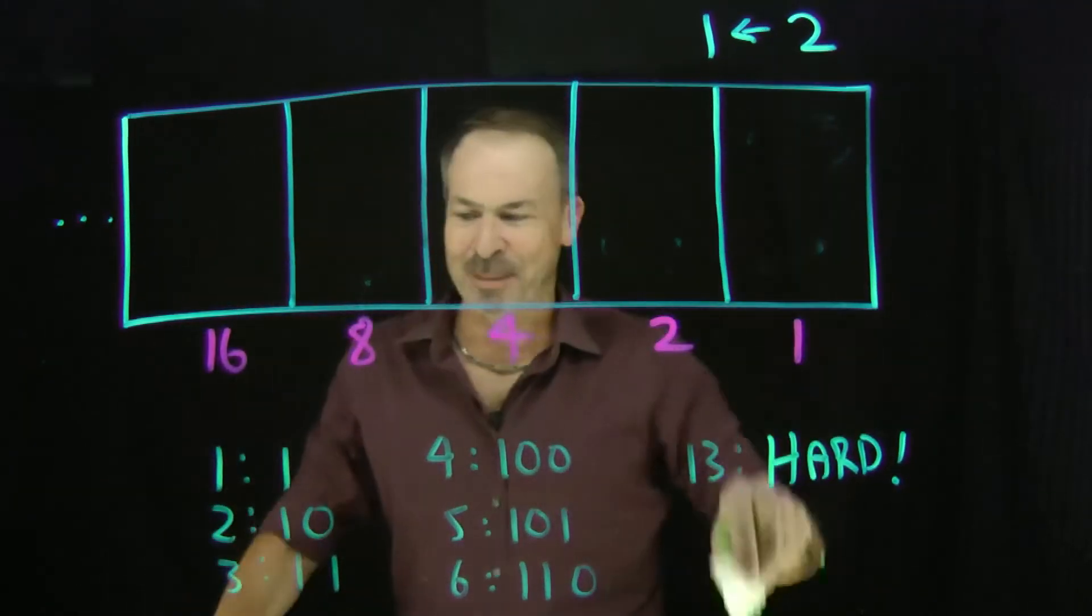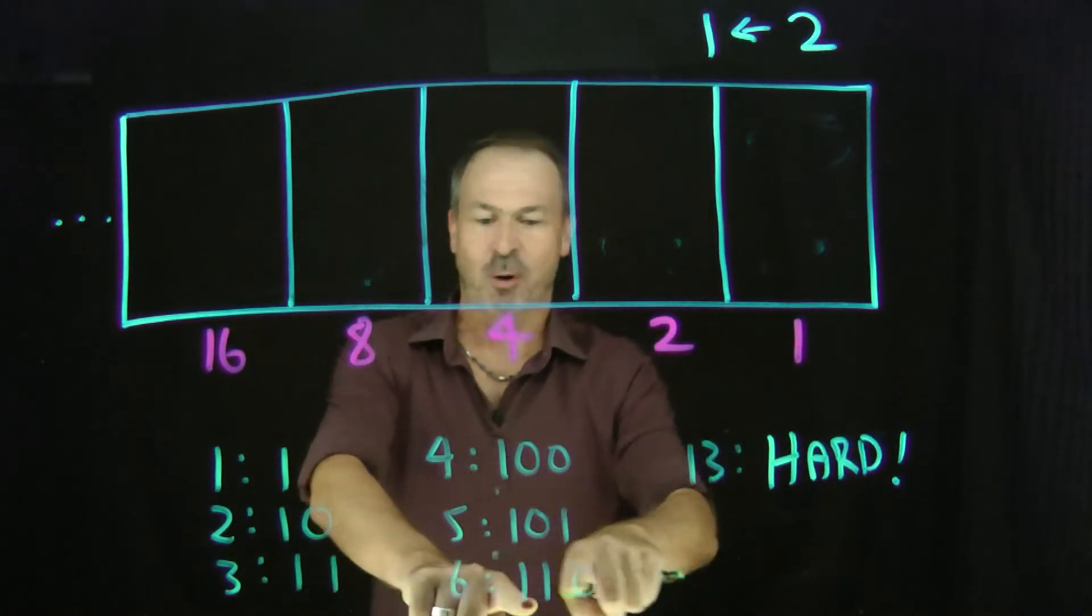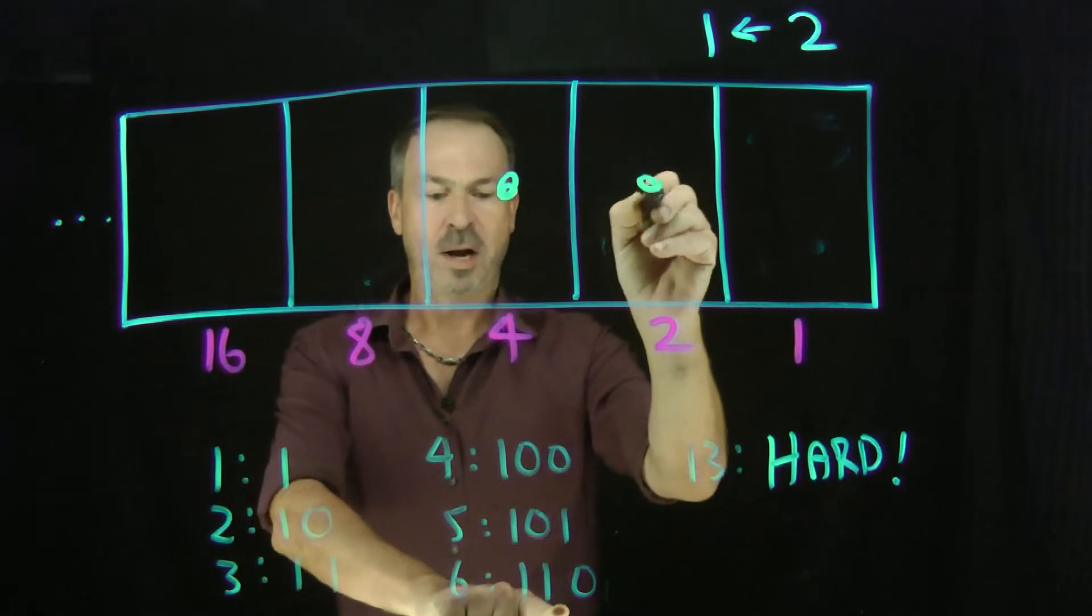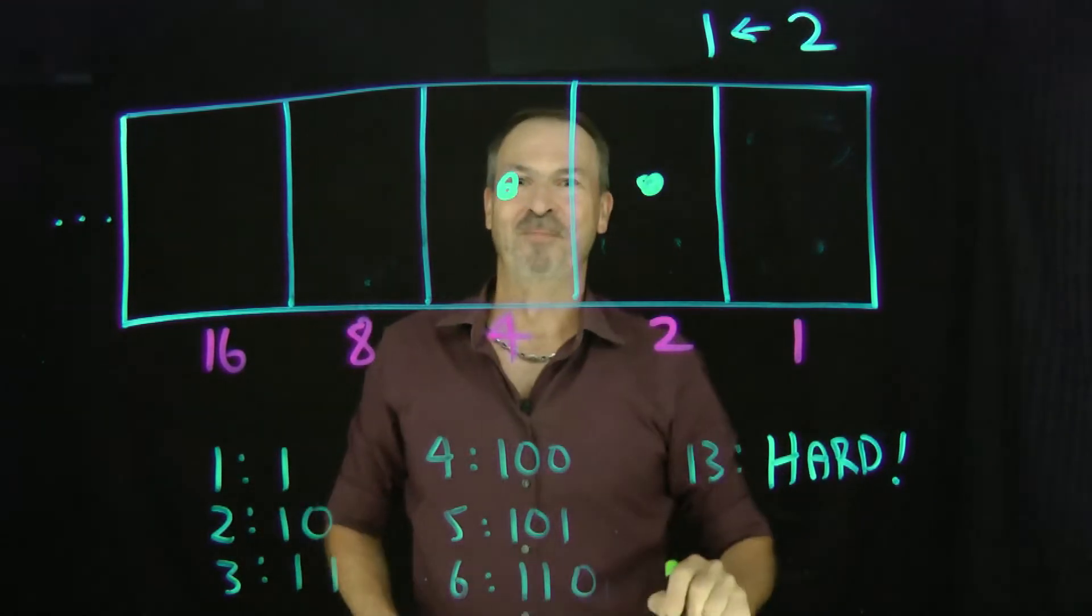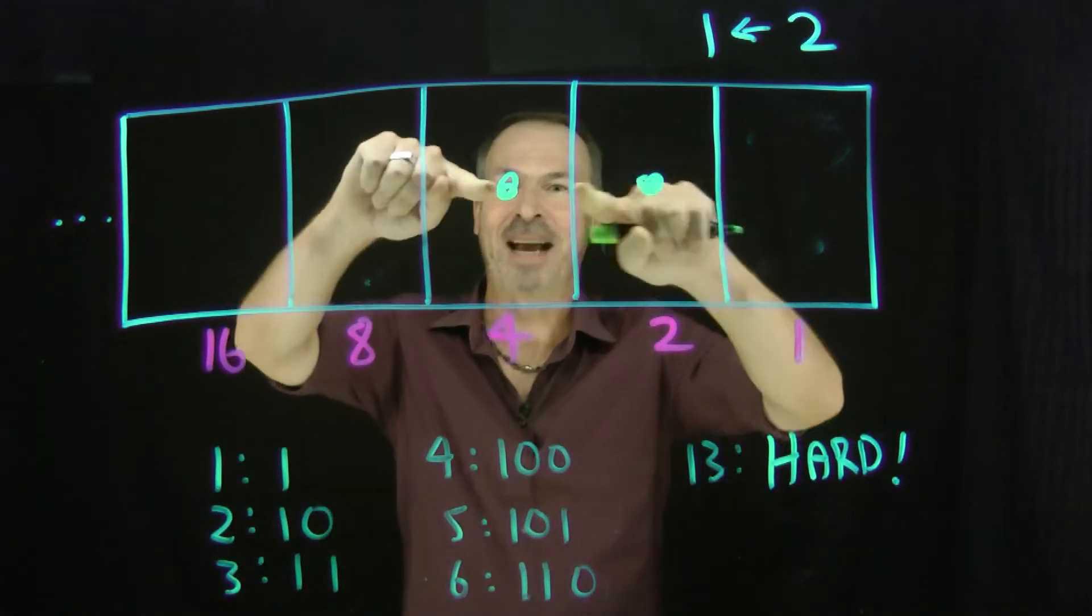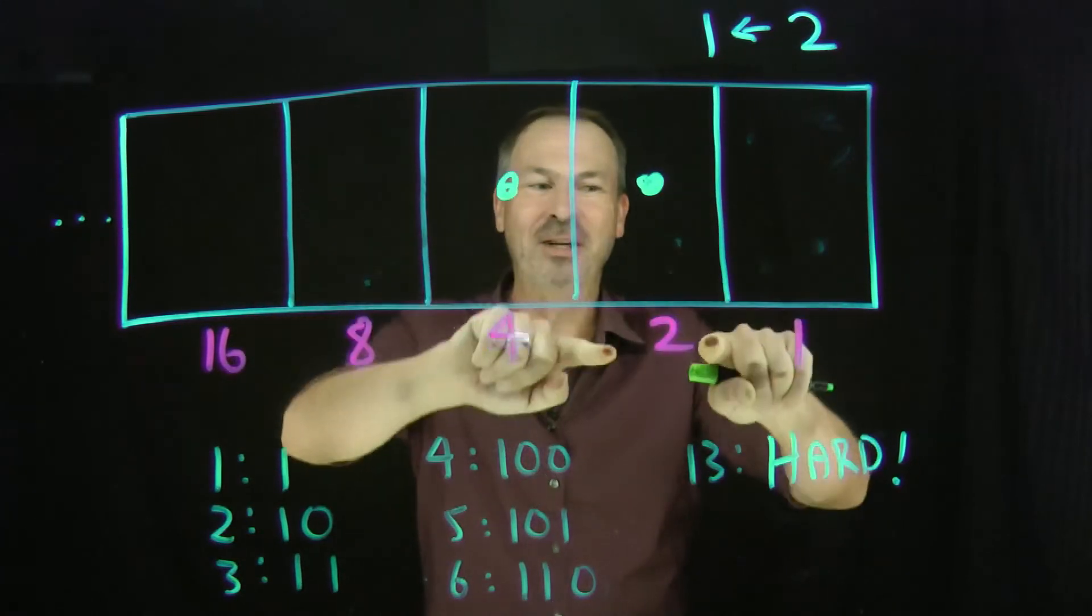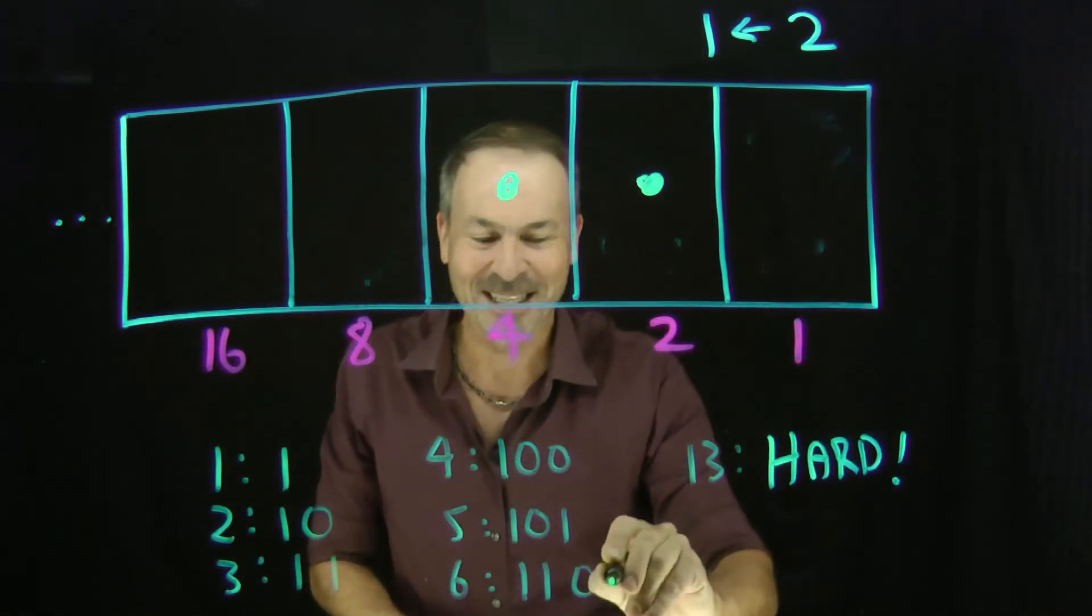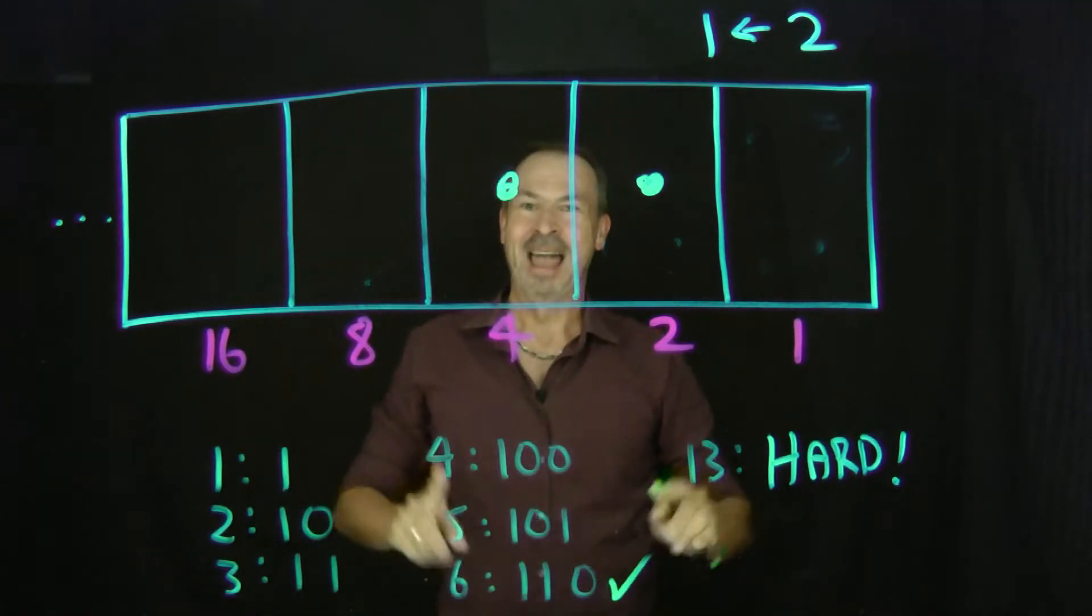Alright, so let's look at some of our codes. Example 6 we said was 1 dot, 1 dot, 0 dot. So 1 dot there, 1 dot there, and 0 dots there. And look, I can see it's correct. 1, 4, and 1, 2, and nothing here, does indeed make 6. Yes, I can see that's correct.